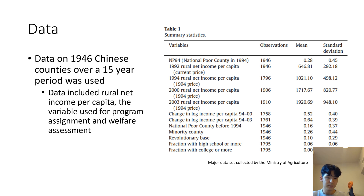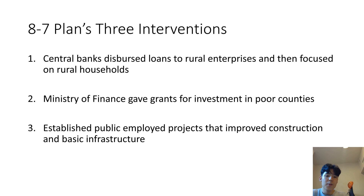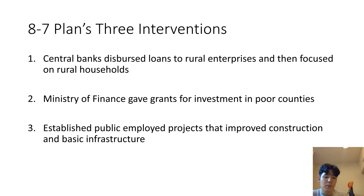The established poverty line at the time was under 700 yuan. Now the 8-7 plan was implemented using a three-prong method. First, the central banks dispersed loans to rural enterprises and then later focused on rural households. Second, the Ministry of Finance gave grants for investments in poor counties. And third, the government established publicly employed projects that improved construction and basic infrastructure in these counties, which ultimately led to short-term jobs.